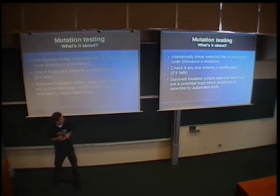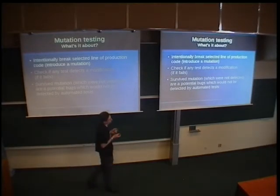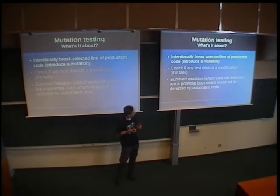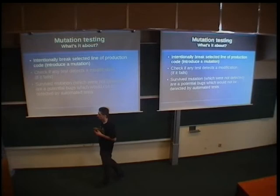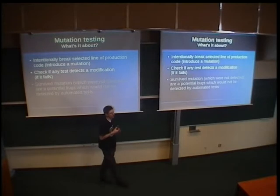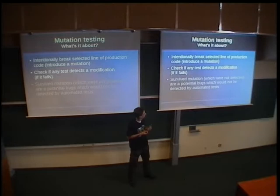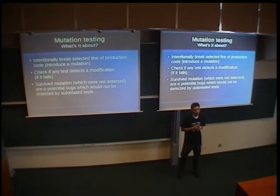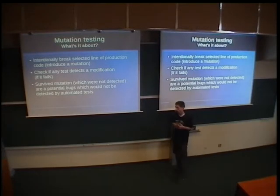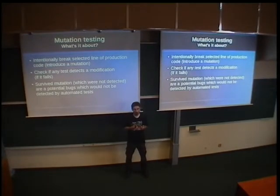Because it's the key part, let's summarize what mutation testing is. In mutation testing, we take a given line and introduce a mutation — we change it intentionally. For example, we can remove a given line. Then we run our tests to check if this change is detected by any test. In the situation that a mutation survived — was not detected — it is a potential bug which would not be detected by automatic tests if introduced accidentally in the future during development.